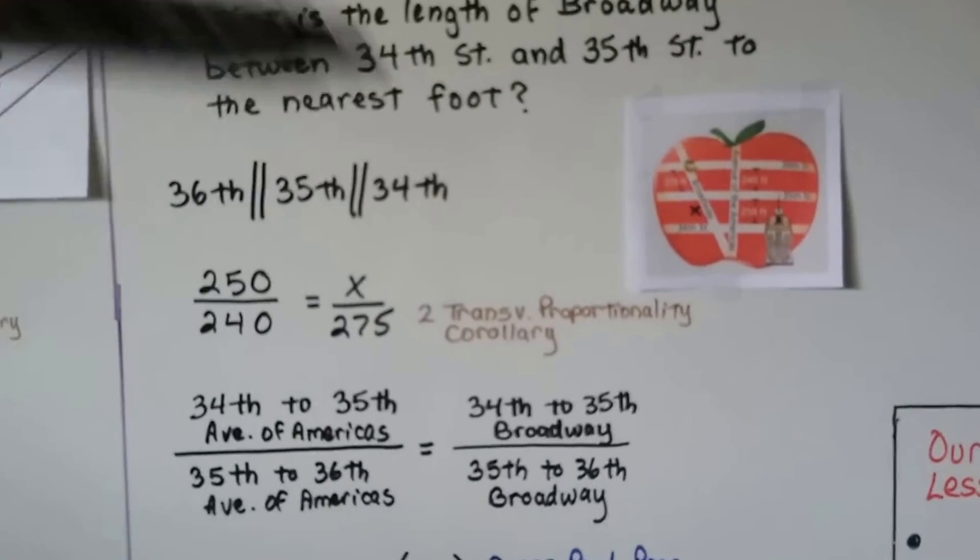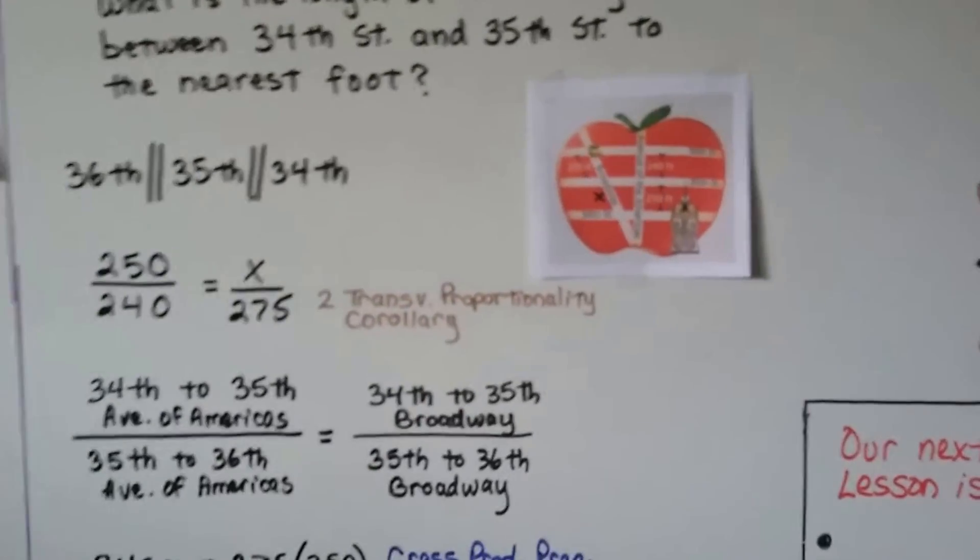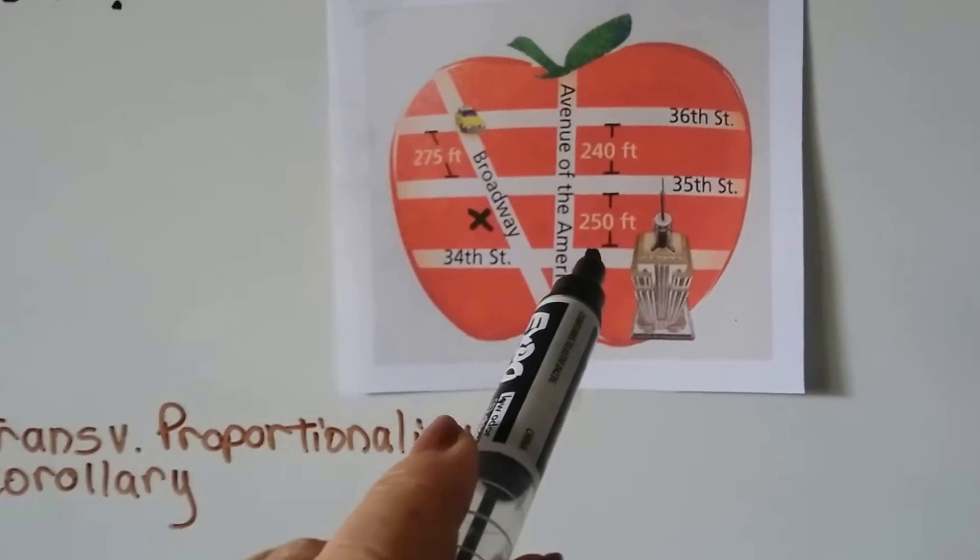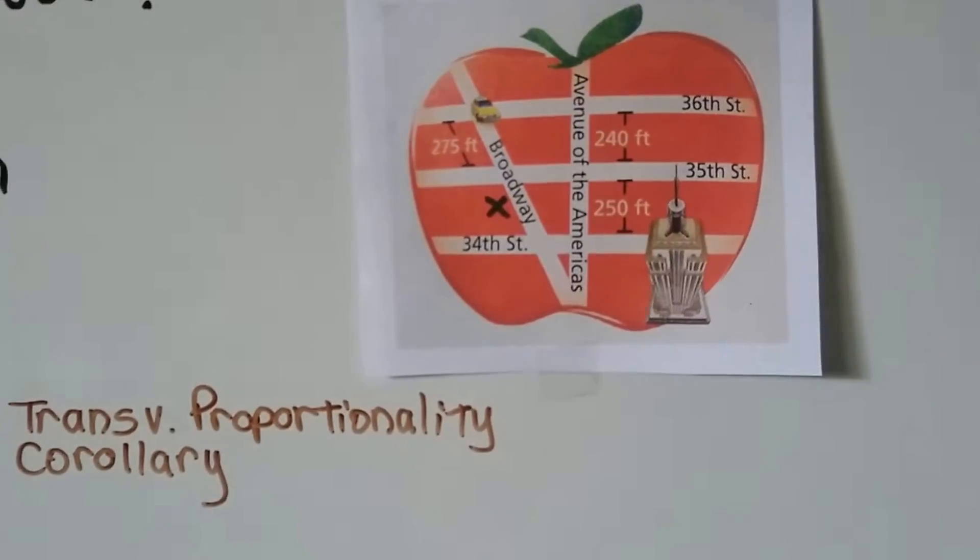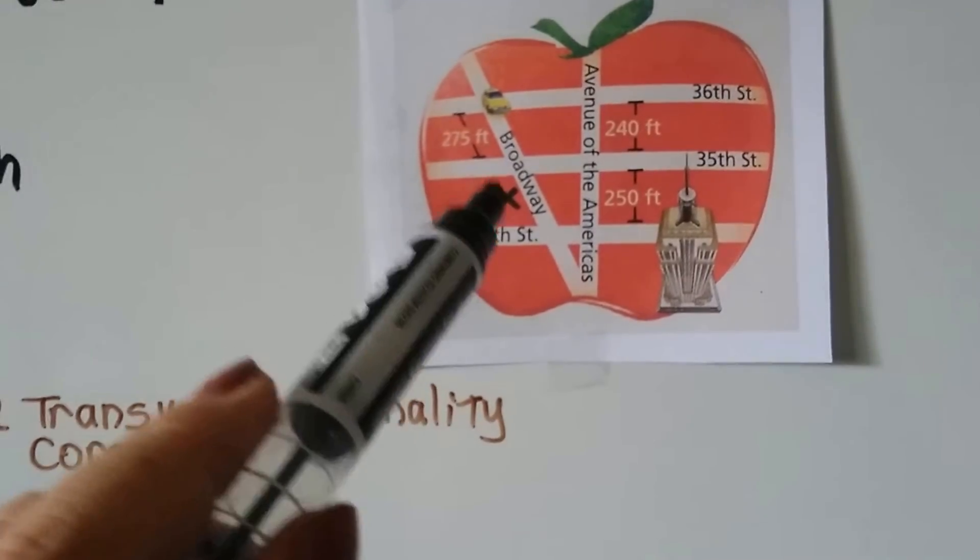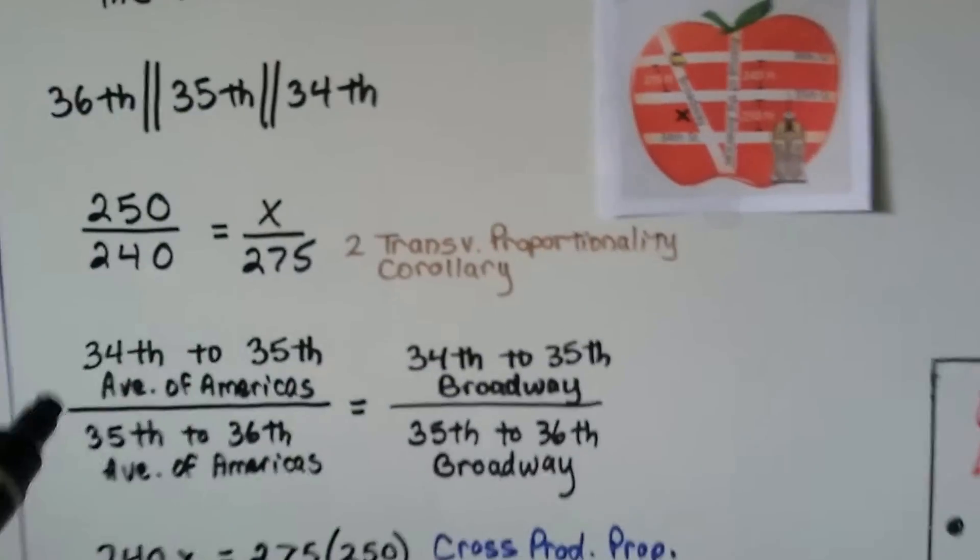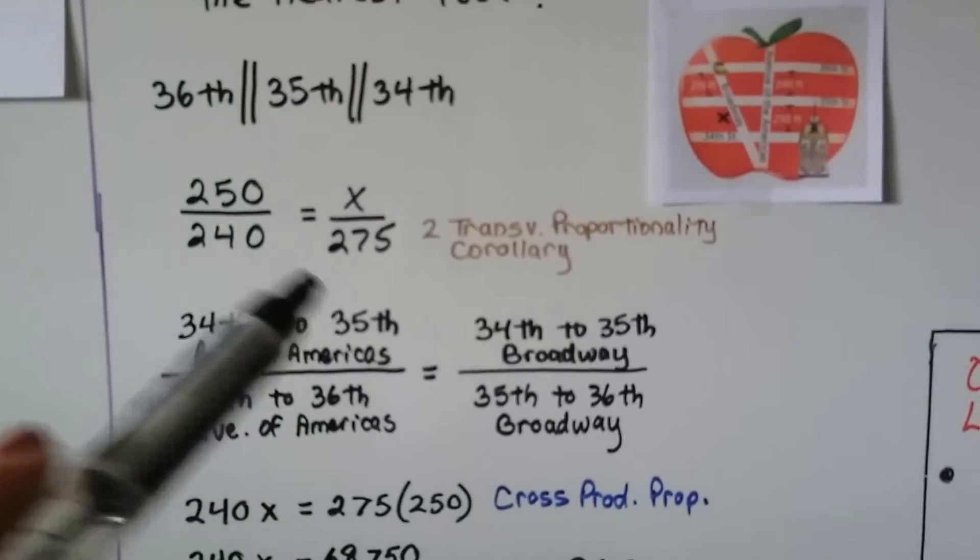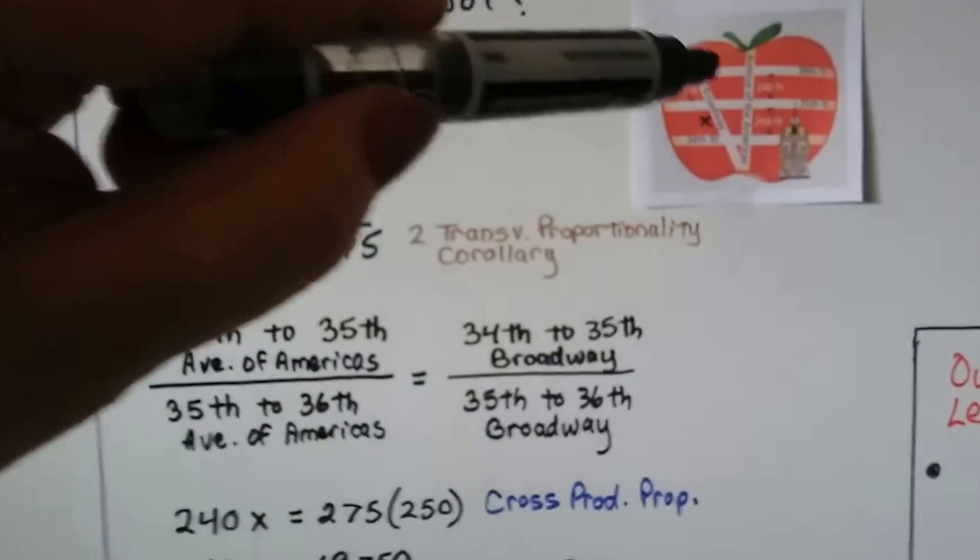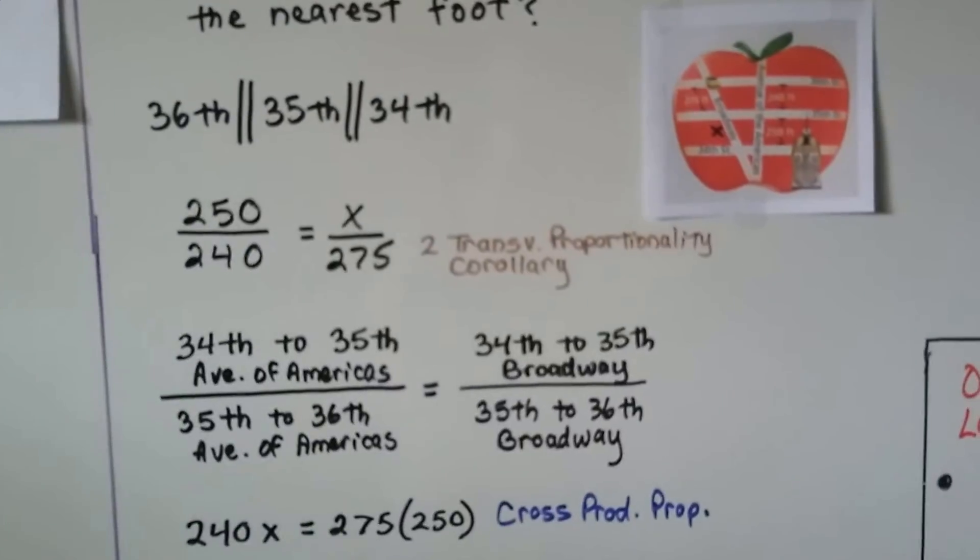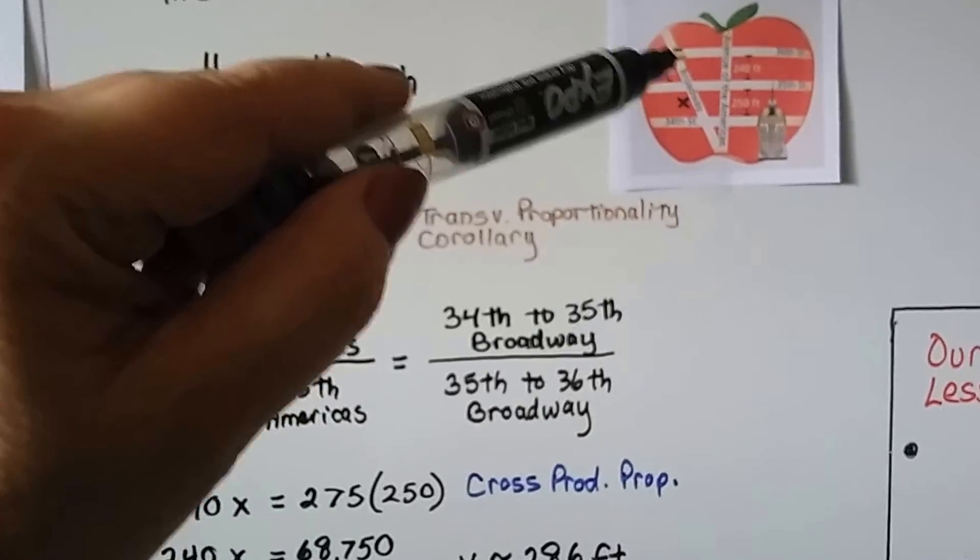So we know 36th Street, 35th Street, and 34th Street are parallel to each other. And we've got 250 feet along the Avenue of the Americas over 240 feet, and that will be equal to x over 275 using the corresponding parts. So we have 35th Street, 34th Street to 35th by the Avenue of the Americas, this little part right here, is going to be over 35th to 36th by Avenue of Americas, and it's going to be equal to 34th Street right here over 35th to 36th right here.